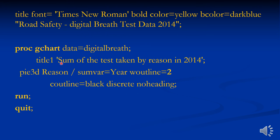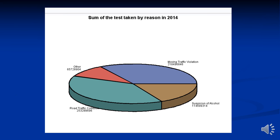This is the code for the chart for this data, and this is the chart that shows the reason the test was taken.